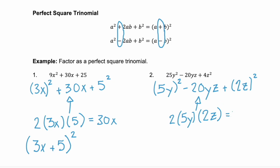2 times 5 times 2 is 20, and y times z. So this is also a perfect square trinomial. But because that middle term has a negative sign, it factors like our second, a minus b squared. So it's our first term, 5y, minus our second term, 2z, all squared.